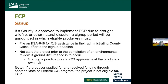If a county is approved to implement ECP due to drought, wildfire, or other natural disaster, a signup period will be announced via newsletters, news releases, and media outlets. Eligible producers must file an application for cost-share assistance in their administrating county office prior to the signup deadline, typically 30 to 60 days. Producers must not start the project prior to completion of an environmental review if ground disturbance is involved — starting before cost-share approval is at the producer's own risk. If a producer received funding through another state or federal cost-share program, including the North Dakota Water Commission program, the project is not eligible for ECP.